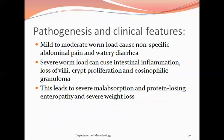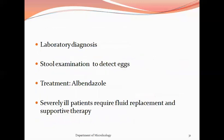Mild to moderate worm load causes non-specific abdominal pain and watery diarrhea. Severe worm load causes intestinal inflammation, loss of villi, crypt proliferation, and eosinophilic granuloma, leading to severe malabsorption and protein-losing enteropathy with severe weight loss. For laboratory diagnosis, stool examination is done using a wet mount to detect the characteristic eggs of the parasite. The infection can be treated with albendazole, and severely ill patients require fluid replacement and supportive therapy.